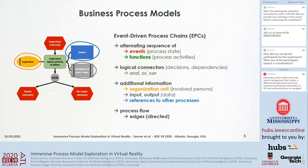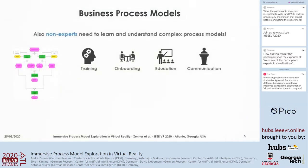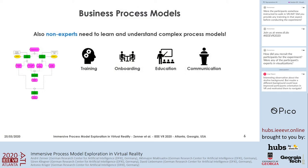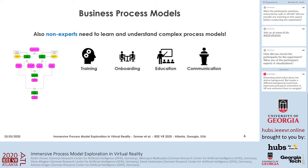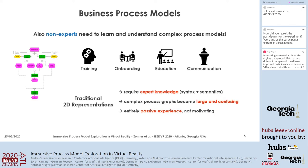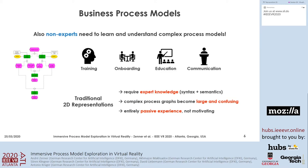Additional information is typically attached to function nodes, represented as organizational units, input, output, or references to other processes. Process model experts understand a process just given their 2D visualization. However, in application domains where non-expert users need to learn and understand complex process models — such as during professional training, onboarding, or education — using traditional 2D representations requires some expert knowledge to understand syntax and semantics of the process, and complex process graphs can become large and confusing. Just learning the 2D structure is also an entirely passive and not very motivating user experience.